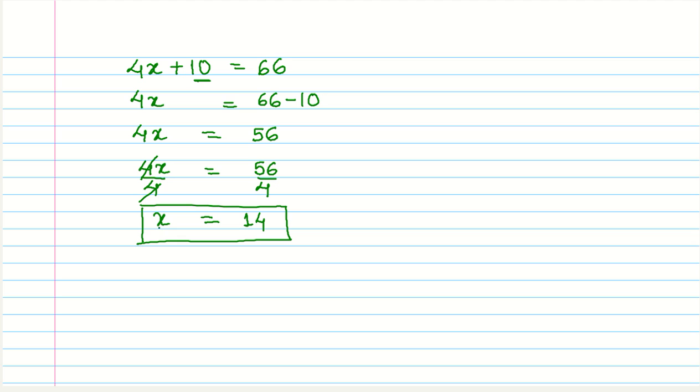Now this, we know that x is the present age of Rohan. So Rohan's age is 14 years. Now, what is his mother's age? It's 3 times x. So it will be 3 into 14, or that equals to 42 years.